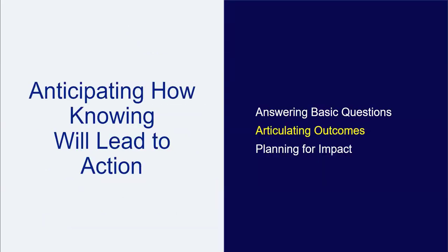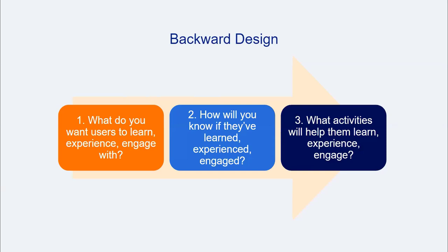In thinking through how information gained through an assessment will lead to positive decisions and actions, another important step is to articulate outcomes. We will focus on outcomes based on user benefits from engagement with library services, resources, and spaces, though outcomes could also be based on individuals and groups other than those we typically describe as users, or even center on the library offerings themselves. One way to think through outcomes for library assessment is to borrow from backward design, which is often associated with instructional design. The basic structure of backward design as popularized by Wiggins and McTighe is arranged around three questions: first, what do we want users to learn, experience, or engage with?